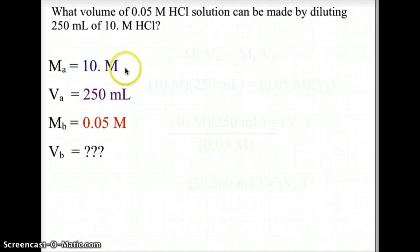As a second example, we have a solution with a volume of 0.05 molar HCl solution, and we're going to dilute 250 milliliters of 10 molar HCl. So let's look at our values again. Our initial molarity is 10 molar. Our initial volume is 250 milliliters. Our second molarity, or the molarity of the final solution, is 0.05 molar. And our volume is what we are looking for.